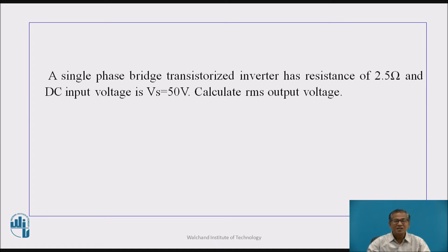A single-phase transistorized inverter has a resistance of 2.5 ohm and DC input voltage Vs = 50 V. Calculate the RMS output voltage. As we know, for the single-phase full-bridge inverter, the RMS output voltage is the same as the supply voltage. Therefore, the RMS output voltage is equal to 50 V.